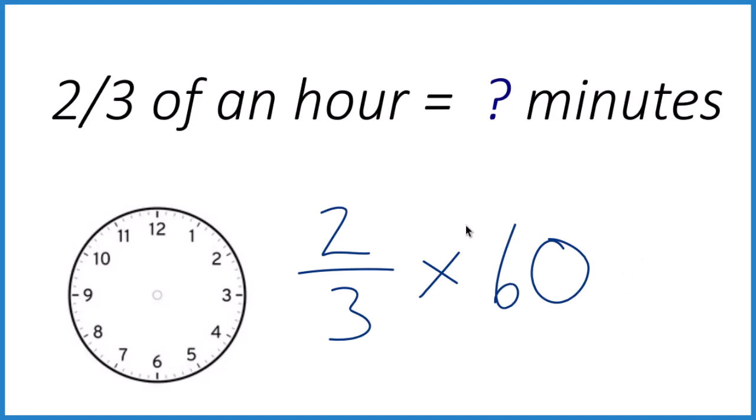So let's do this. Let's call this 60, but let's call it 60 over 1. 60 divided by 1 is still 60, but now the numerators and the denominators line up, and we just multiply.